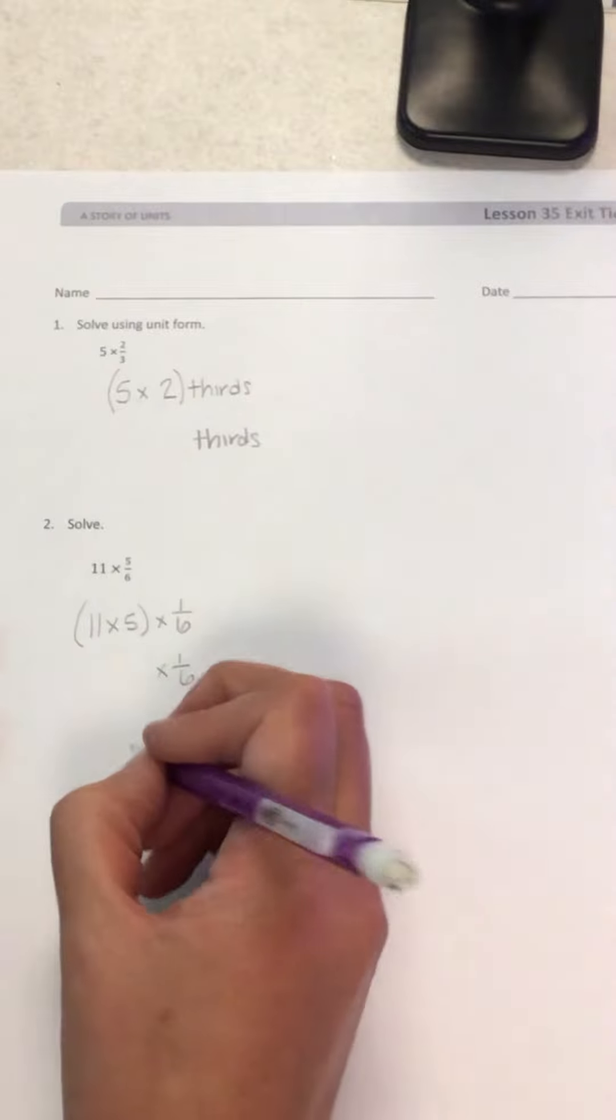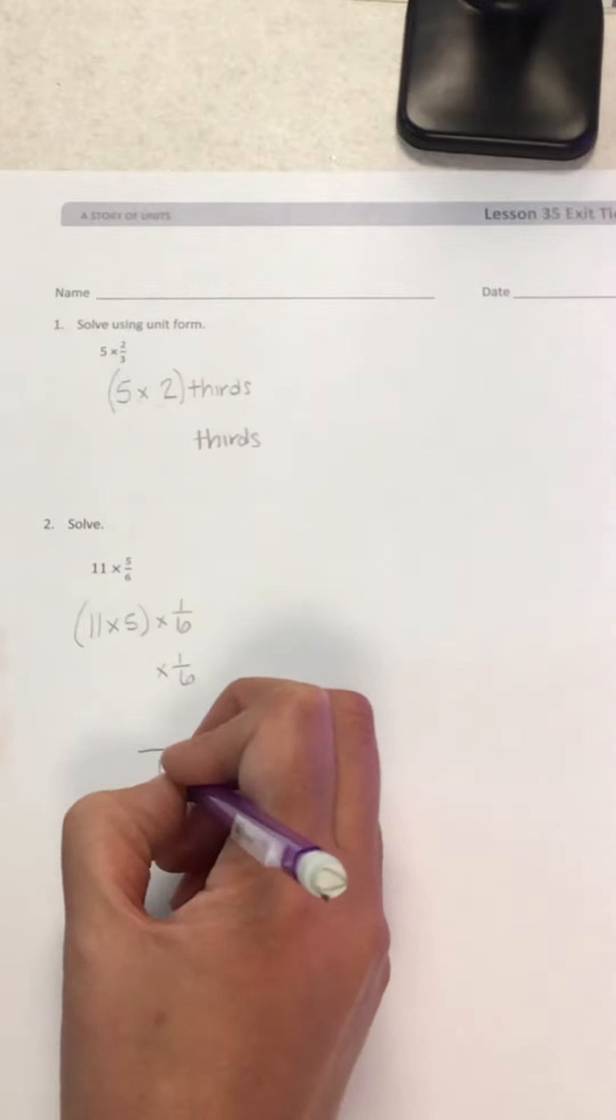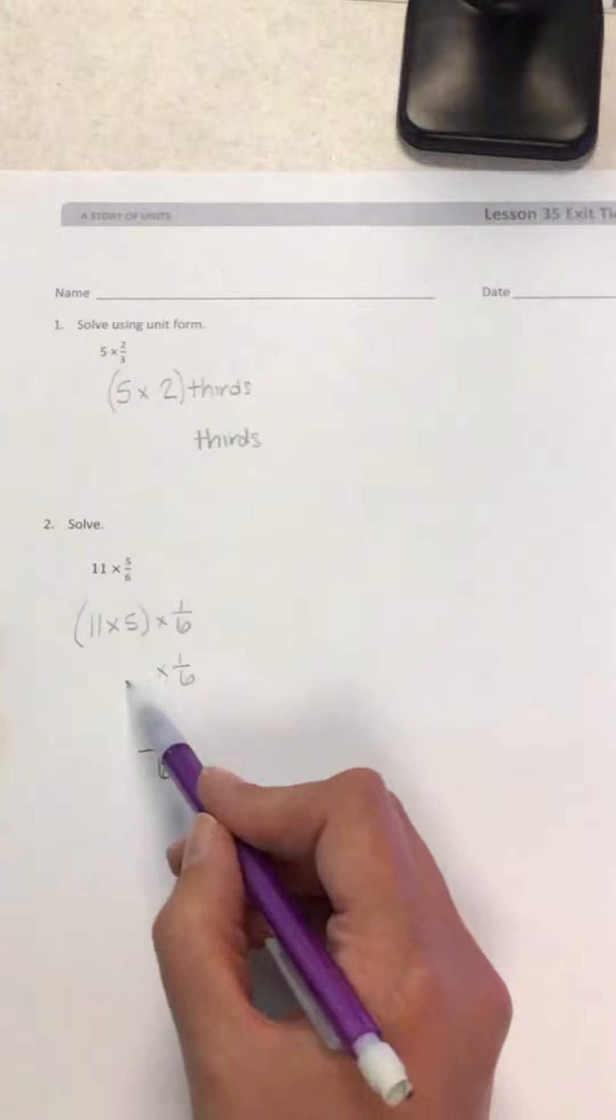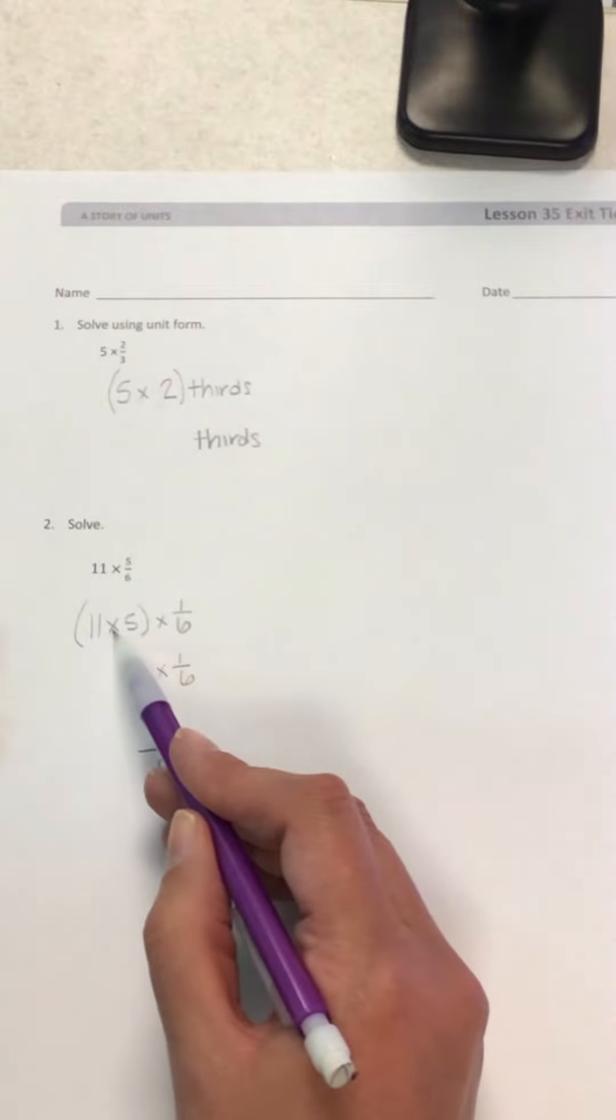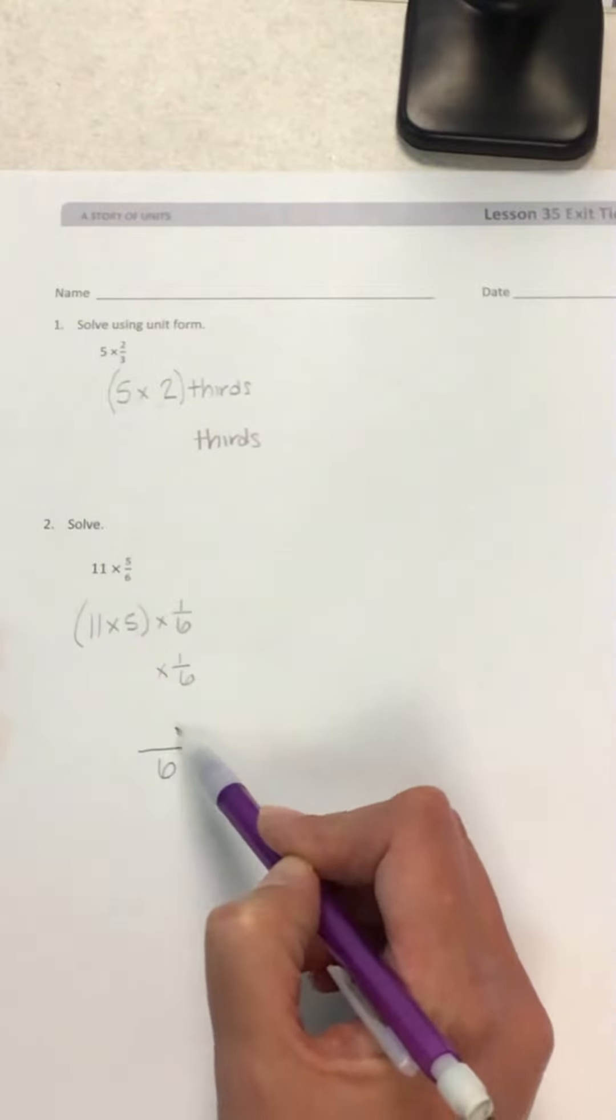Okay, and then my answer is going to look like this. I'm going to have 6 in the denominator, and then I'm going to pull this number here that's missing. 11 times 5 will be here in my numerator.